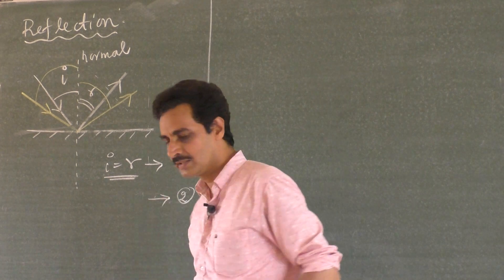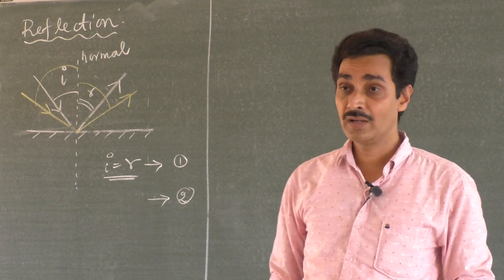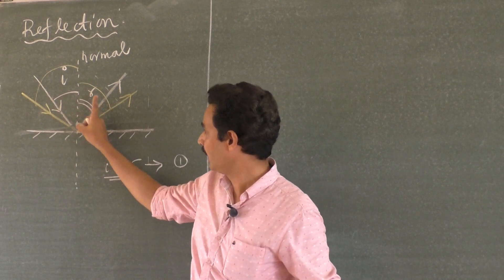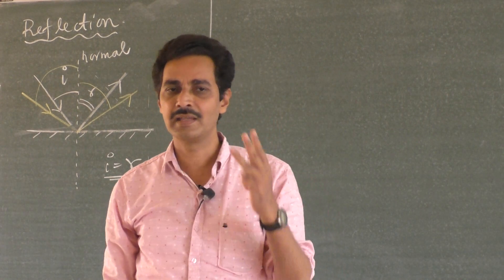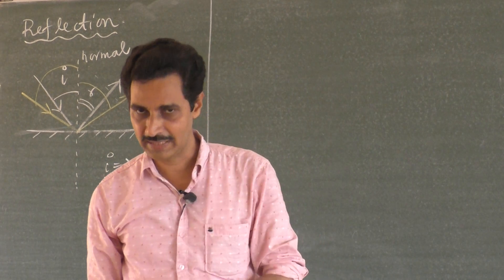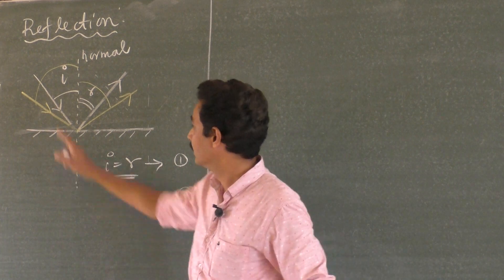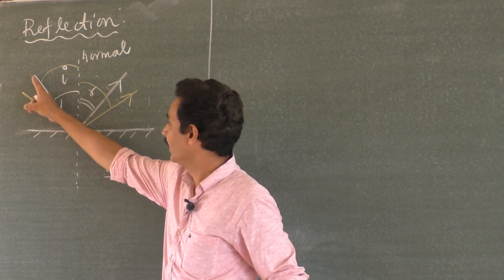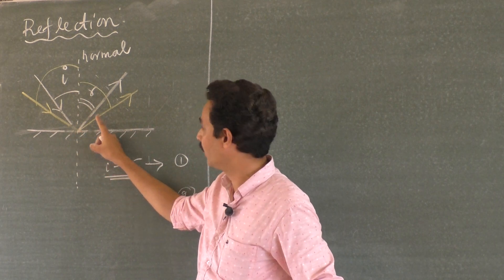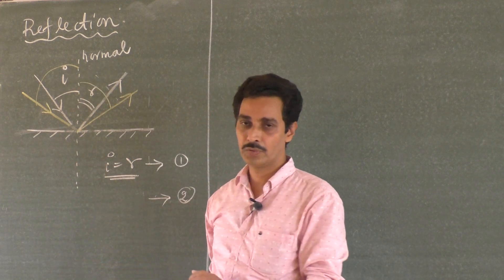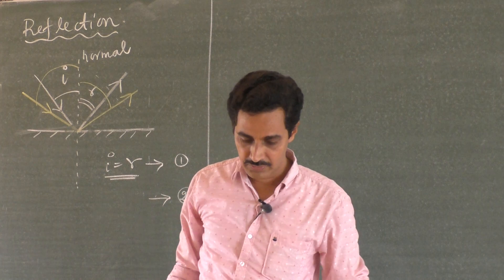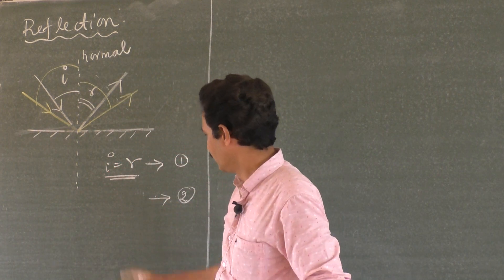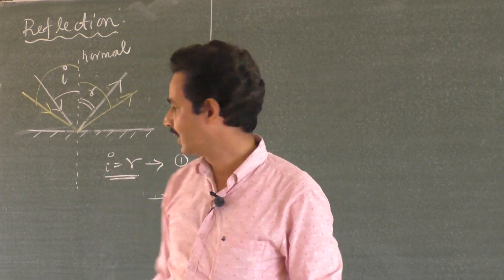The second law says: the incident ray, the reflected ray, and the normal all lie in the same plane. You cannot expect a ray of light falling on a mirror from one direction and coming out in a completely different plane — that is impossible. A ray of light falling along the board and after reflection should reflect along the board, and the normal should be on the board too. All three lines — incident ray, reflected ray, and the normal line — lie in the same plane. That is the second law of reflection.